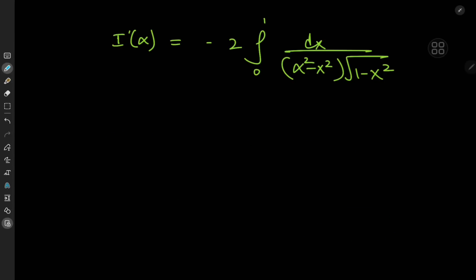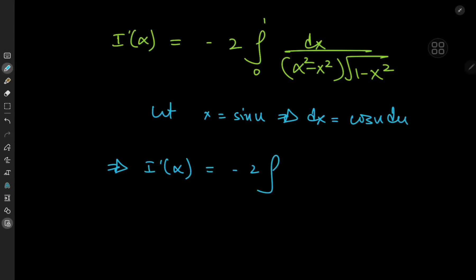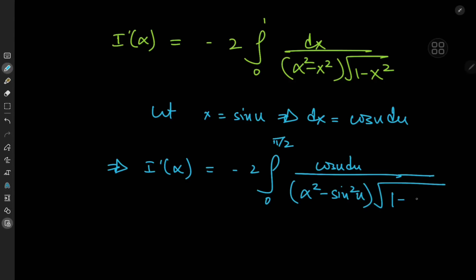To evaluate this new integral, we perform the substitution x = sin(u), motivated by the 1 minus x² term. This implies dx = cos(u) du. The limits transform: as x approaches 0, u approaches 0; as x approaches 1, u approaches pi/2. The integrand becomes cos(u) du divided by (alpha² - sin²(u)) times the square root of 1 minus sin²(u), and the square root gives cos(u), which cancels nicely.